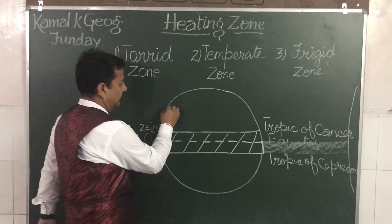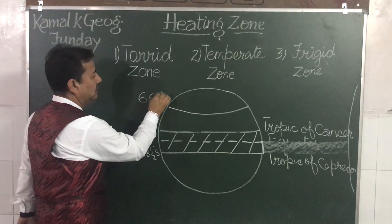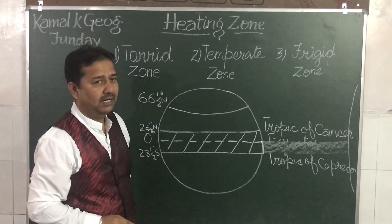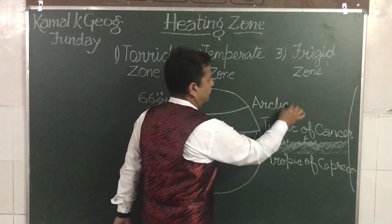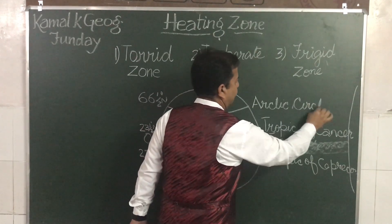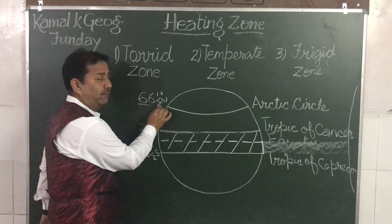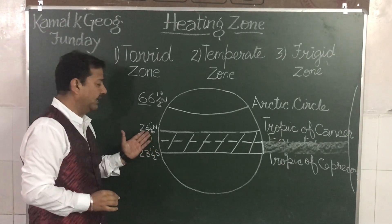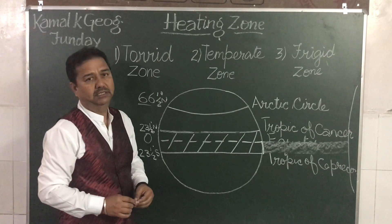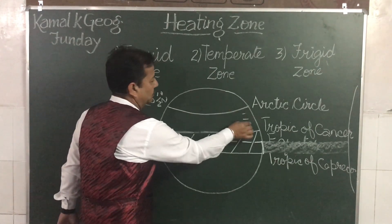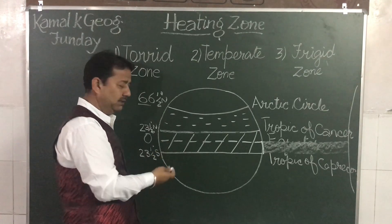Going further north, this is your 66 and a half degrees north latitude, or the Arctic Circle. From 66 and a half degrees north to 23 and a half degrees north — that is, from the Arctic Circle to the Tropic of Cancer — this region is called the Temperate Zone or Moderate Zone in the northern hemisphere.